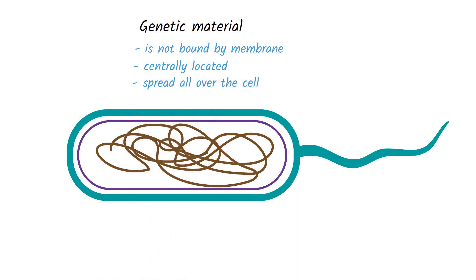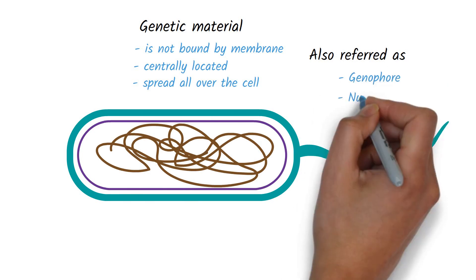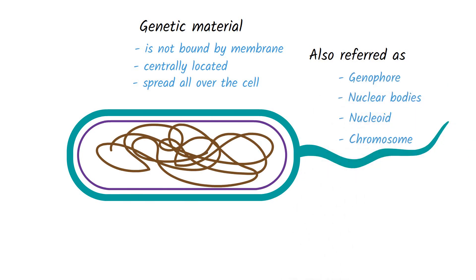The genetic material in bacteria is also referred with multiple terms as genophore, nuclear bodies, nucleoid, or chromosome. Usually, two or more nucleoids can be found in the cell.